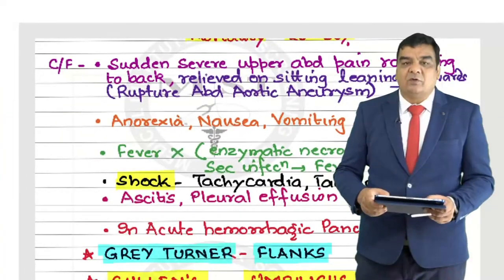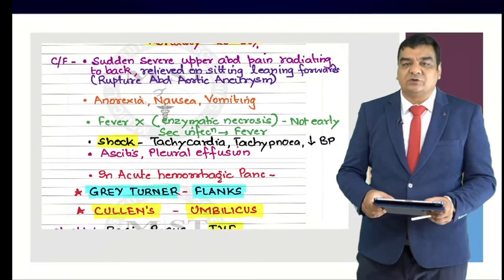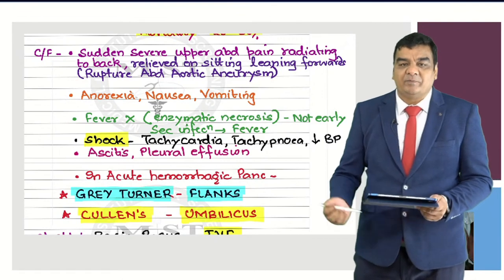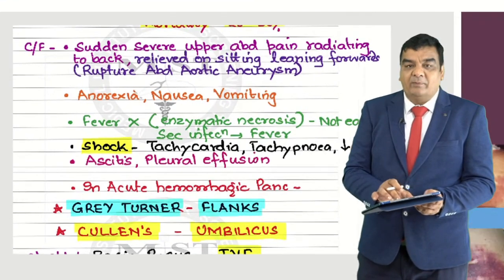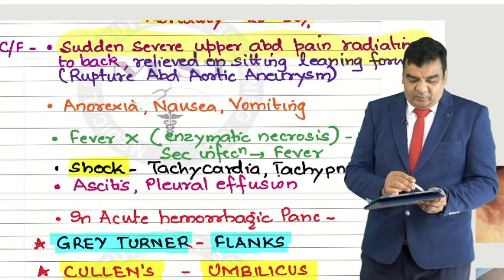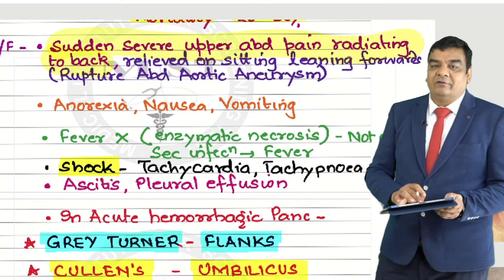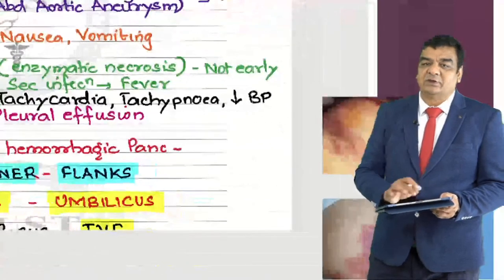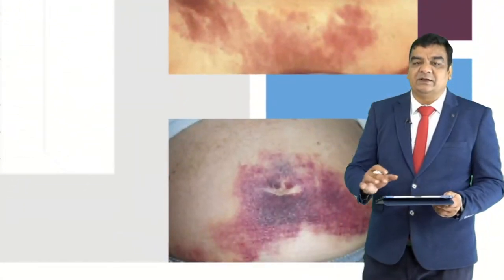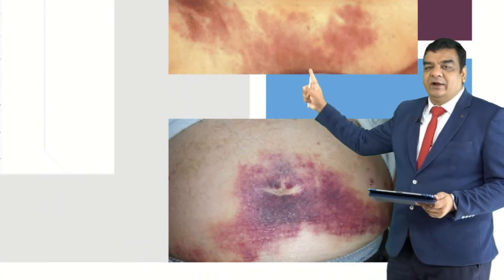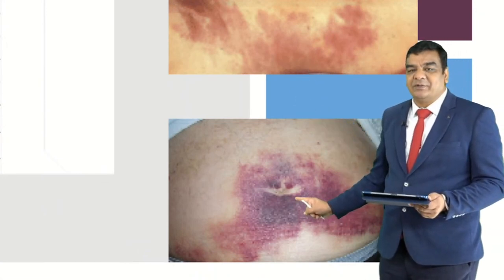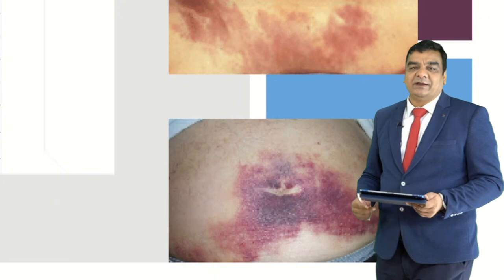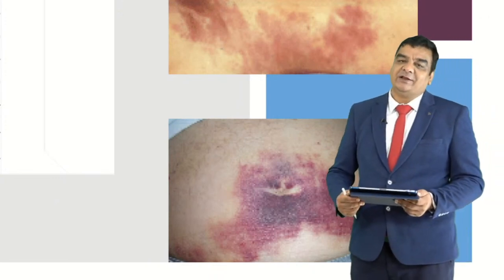In acute pancreatitis, there is sudden severe abdominal pain radiating to the back, relieved on sitting or leaning forwards. We have also seen Cullen's sign — bluish discoloration around the umbilicus — and Grey Turner's sign — bluish discoloration in the flanks. This was also asked in the 18 June 2021 exam: they gave an image of an obese abdomen with a bluish halo around the umbilicus and asked in which condition this is seen.